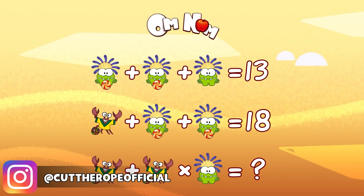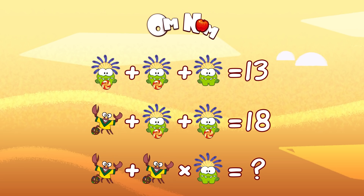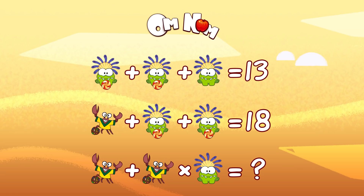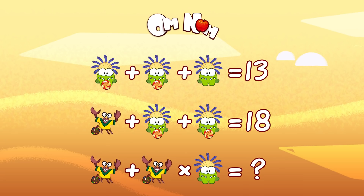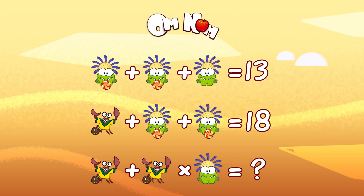Hello my friend, how are you today? Let's do some math with Om Nom. Take your time, try to solve it on your own and then we can do it together. Okay, you ready? Let's go. So the first line here we have three Om Noms. What's on your head? I love this hat. So two Om Noms with candy, and Om Nom with candy plus Om Nom with candy plus Om Nom with no candy — good for you — equals 13.